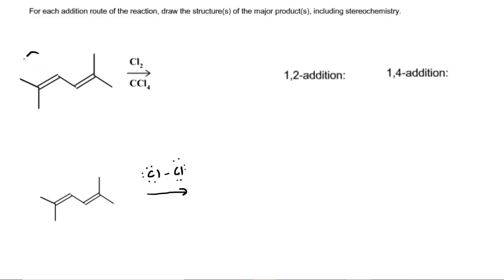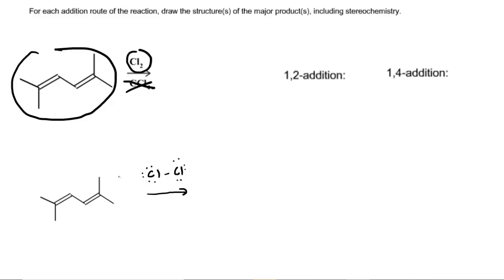In this reaction, we have to take the conjugated diene and react it with chlorine. The carbon tetrachloride is inert, so it does not participate in the reaction. We have to predict two types of products: the 1,2 addition as well as the 1,4 addition, while also keeping track of stereochemistry. We will attack the 1,2 addition product first.